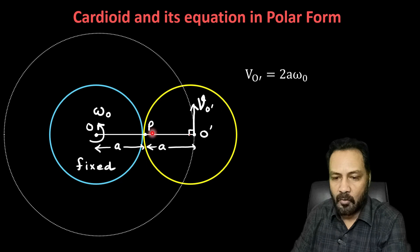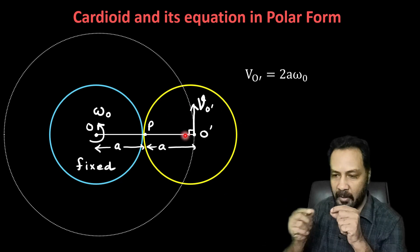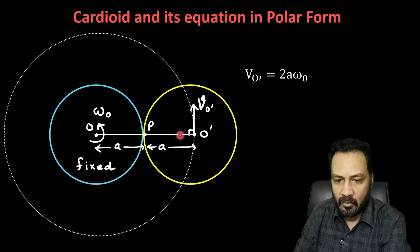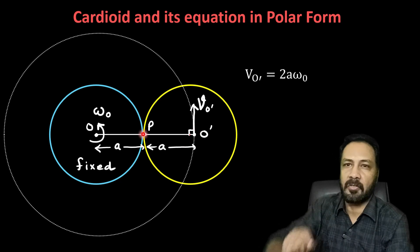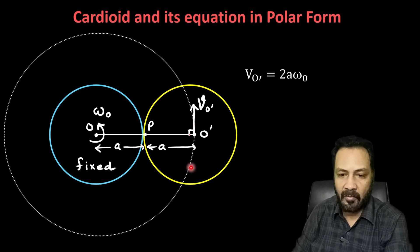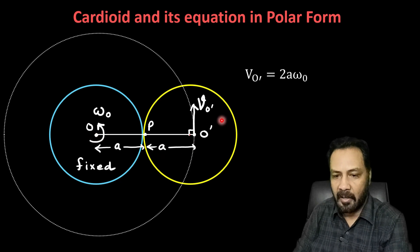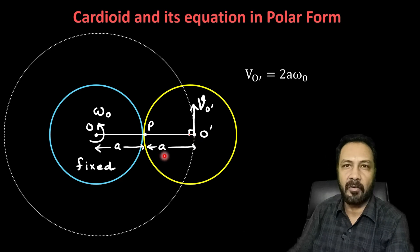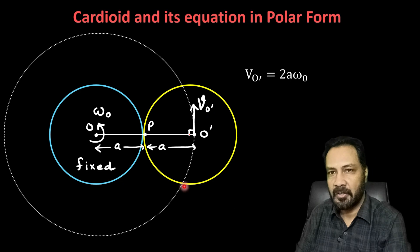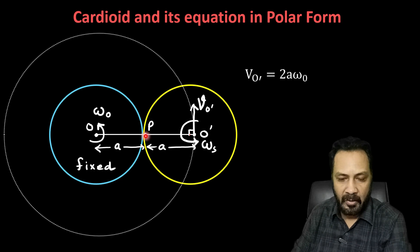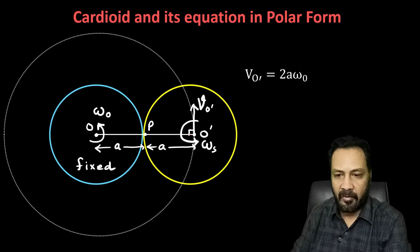If we look at the motion of the rolling circle, it has two rotations. Number one is the orbital angular velocity — that is omega_o. Additionally, any line joining center O' to a point on the perimeter also rotates, giving a spin angular velocity omega_s. So the rolling circle has two angular velocities: the orbital angular velocity omega_o and the spin angular velocity omega_s.